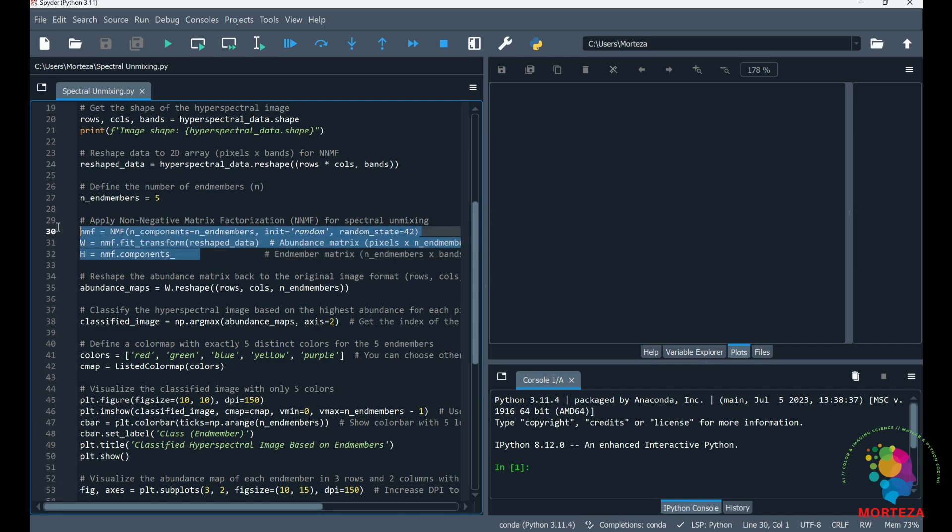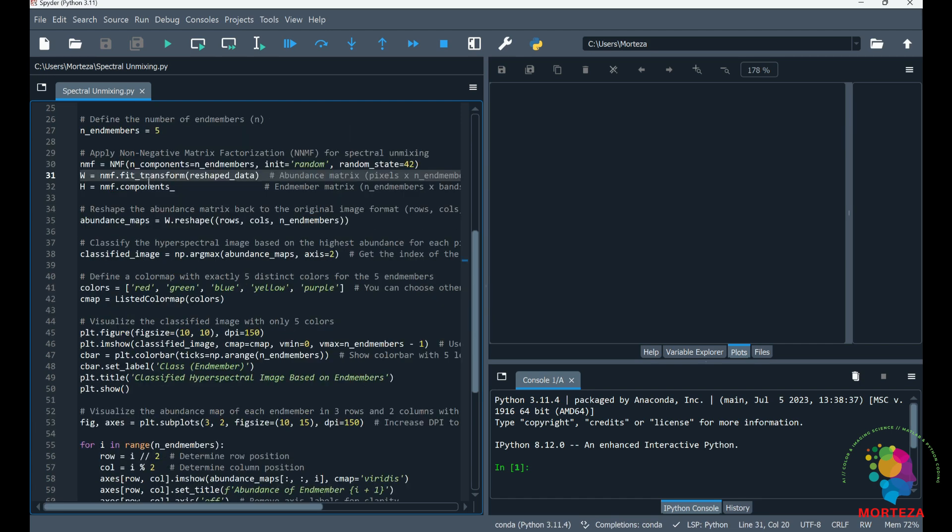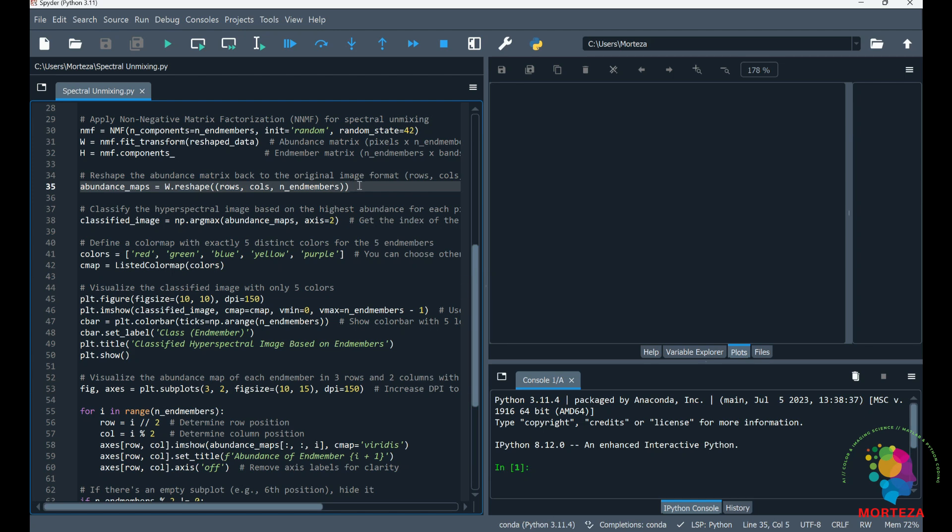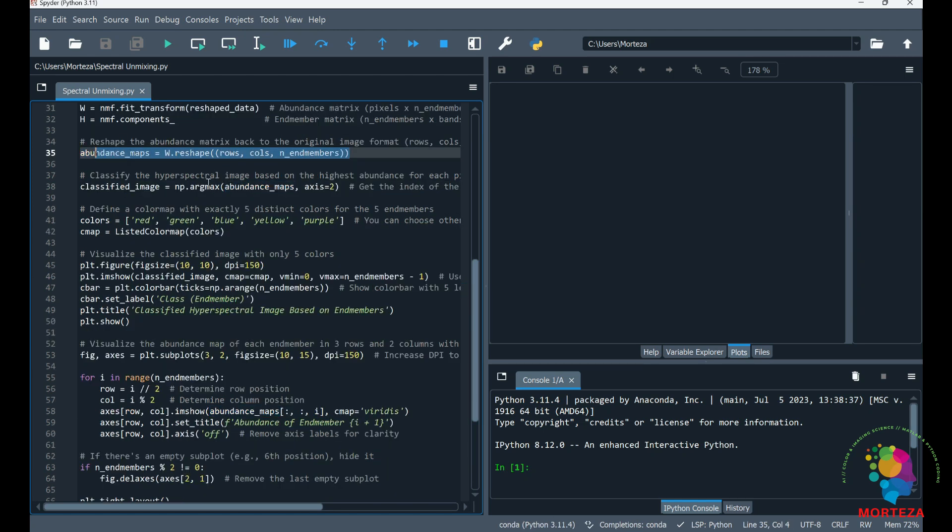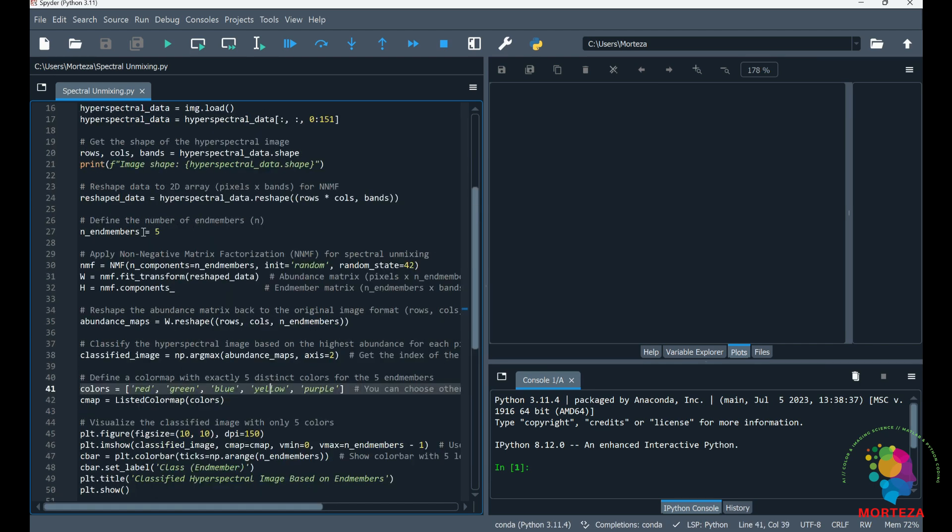And the NNMF is applied here. This is where I'm getting the abundance and endmembers matrices. This is where I'm reshaping the abundance matrix into an image. And now I'm going to use those endmembers to classify the images as shown here.